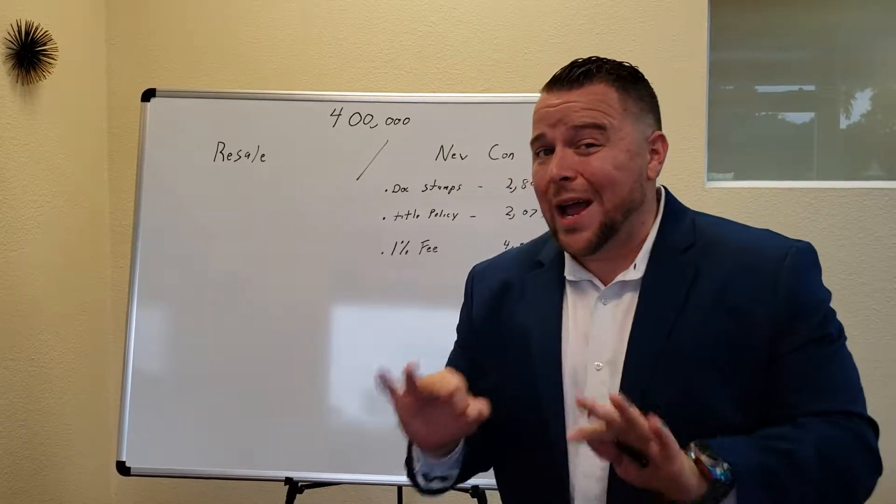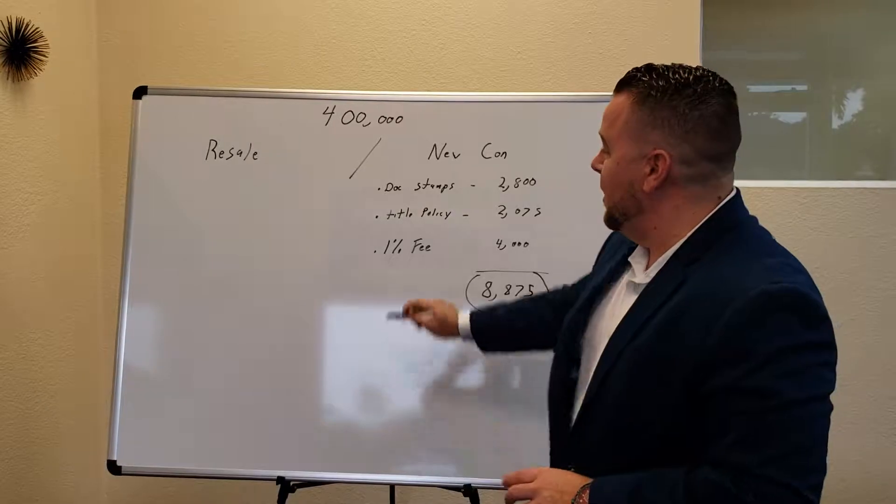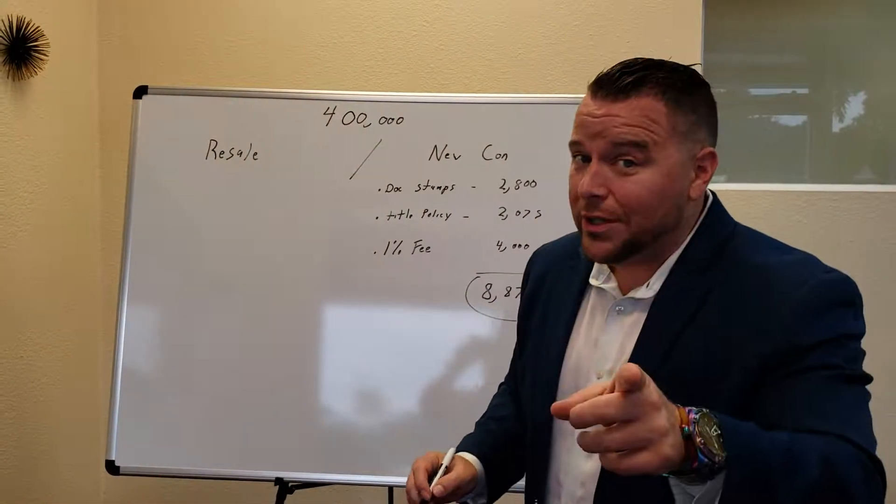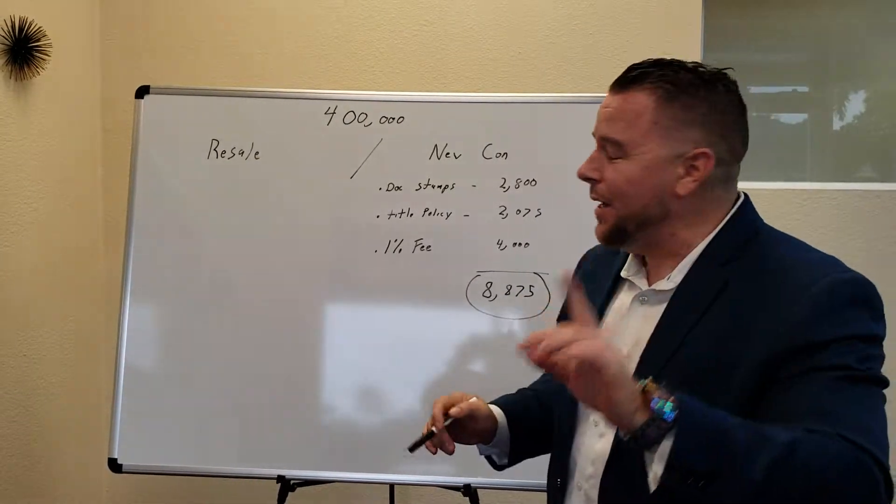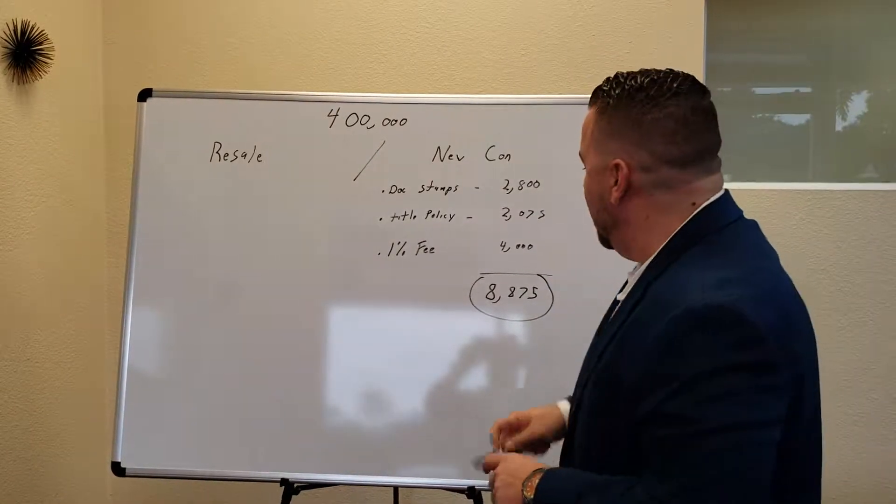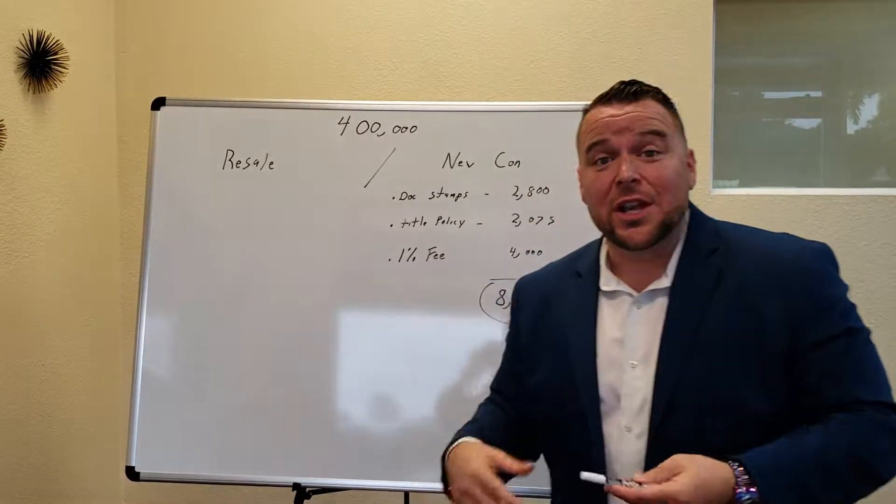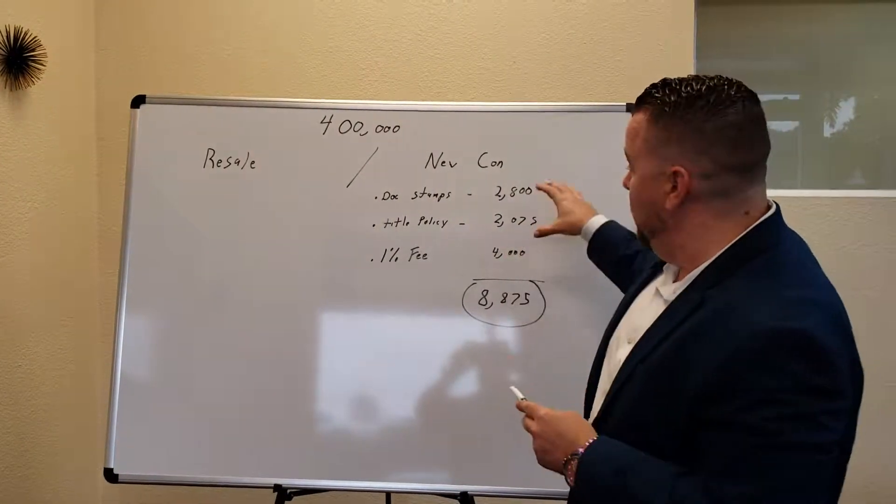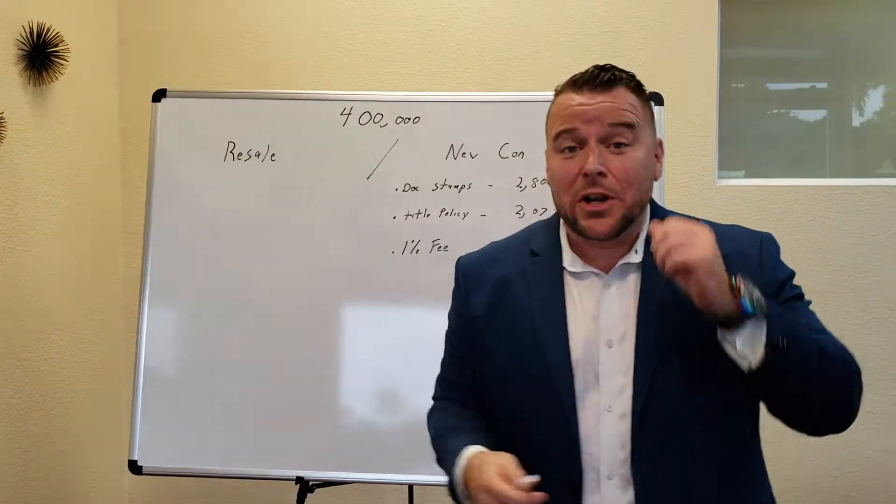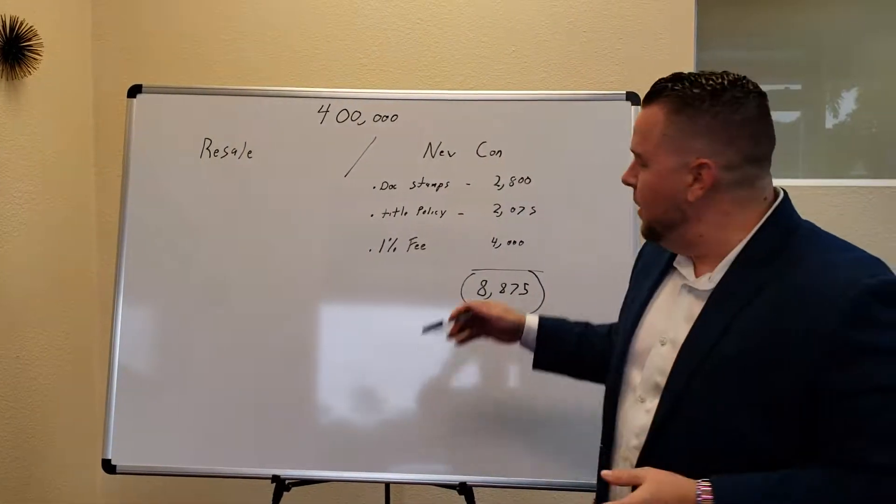Well, when you buy a brand new house, the builder is making you pay the doc stamps. They're making you pay the title policy, which then again, you can actually choose your own title company because I'll go into depth with that in a second. And normally, there's a 1% builder fee that a lot of people don't know about. Now, so that's an extra $8,875 that actually costs you when you buy a new construction. But then you say, hey, wait a minute, but the builder's saying he's going to give me money towards closing costs. They're going to give me $10,000 or whatever, or $15,000.